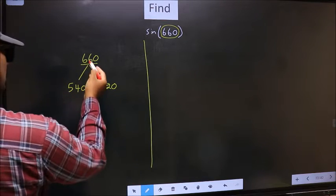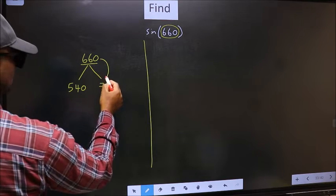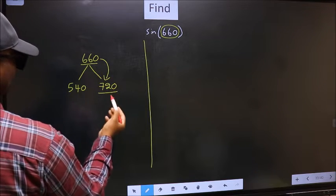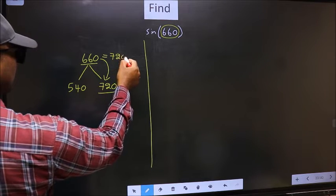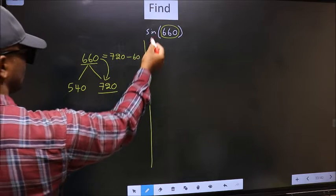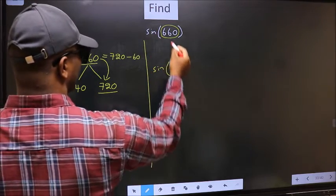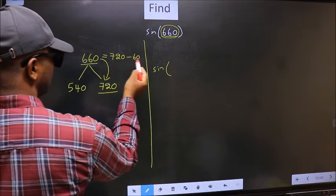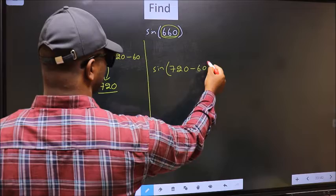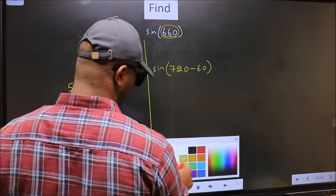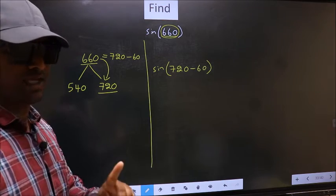Next. Now 660 is close to which number? This is close to 720. So this now should be written as 720 minus 60. So this will become sin. In place of this, we should write this one now: 720 minus 60. This is your step 1.